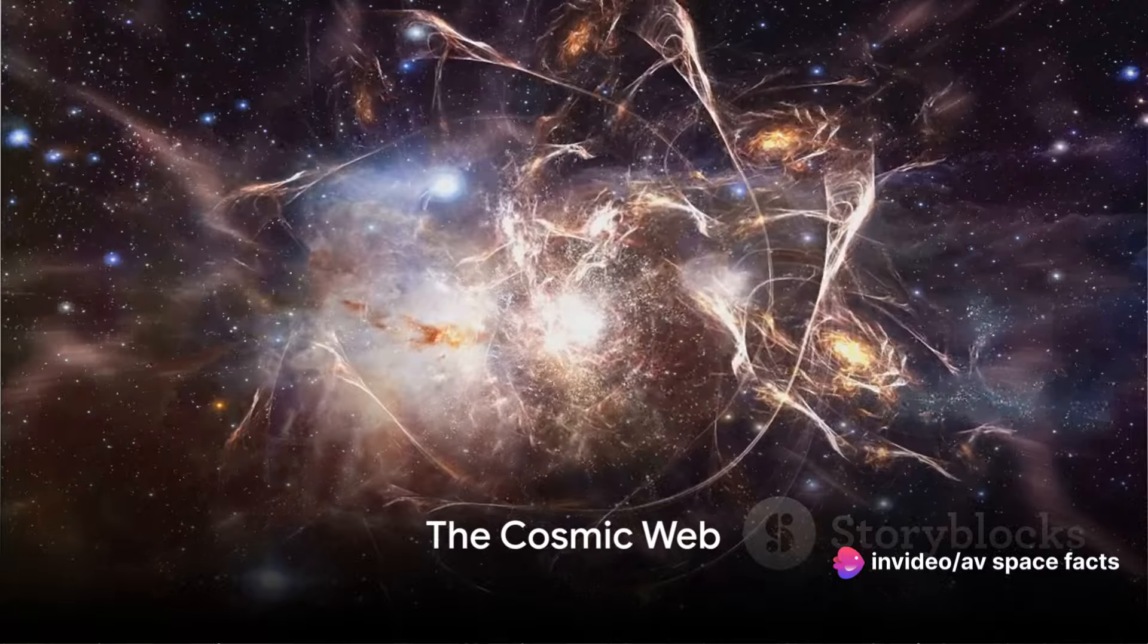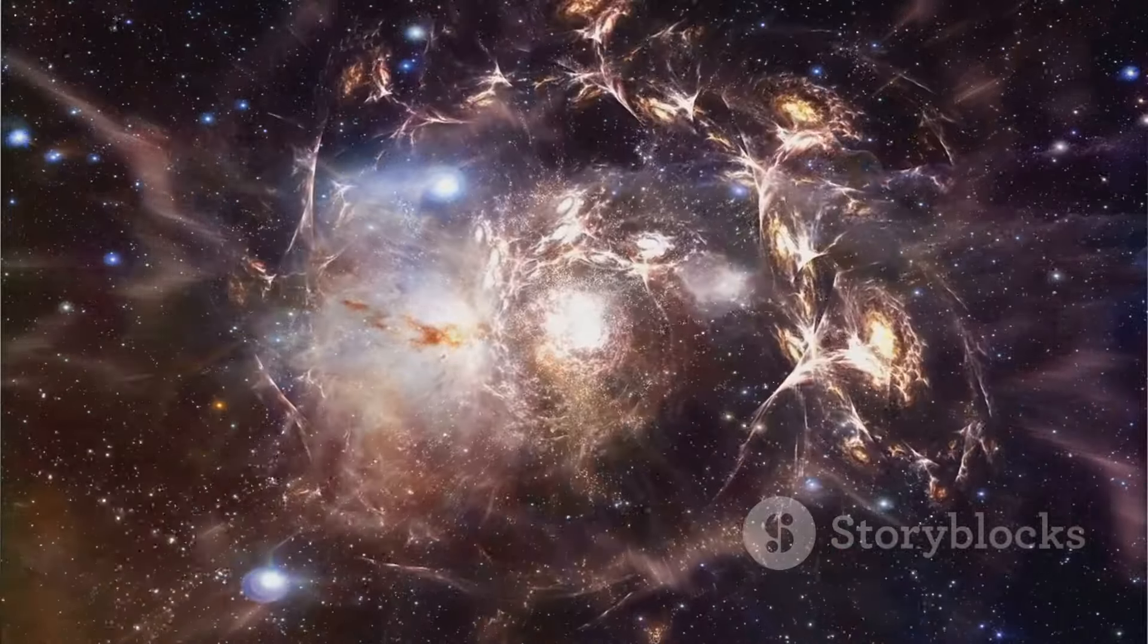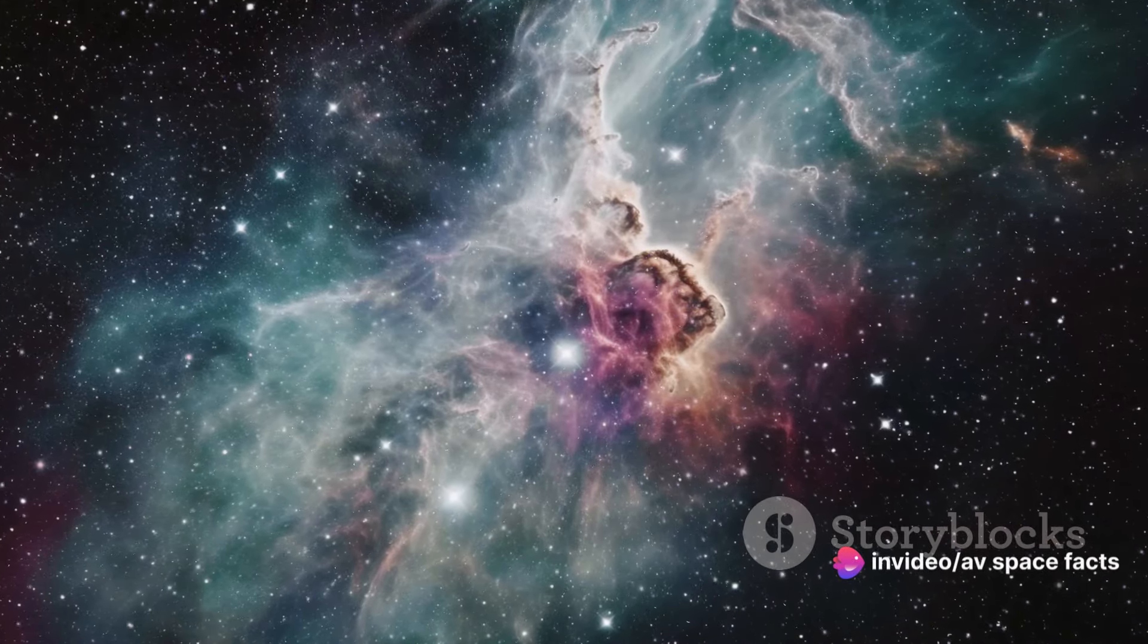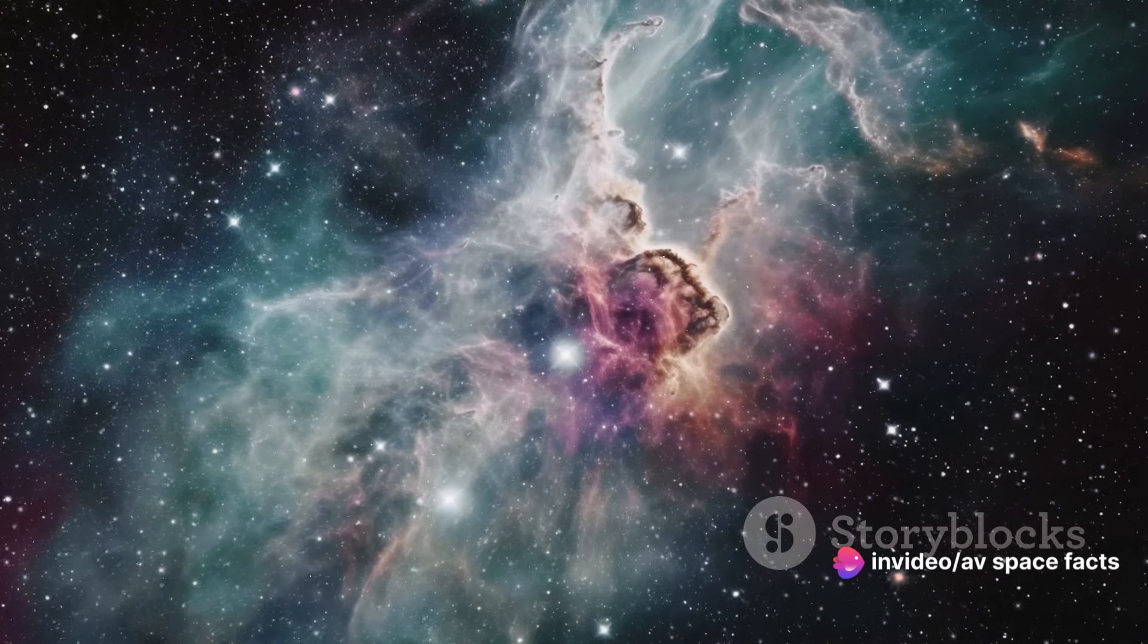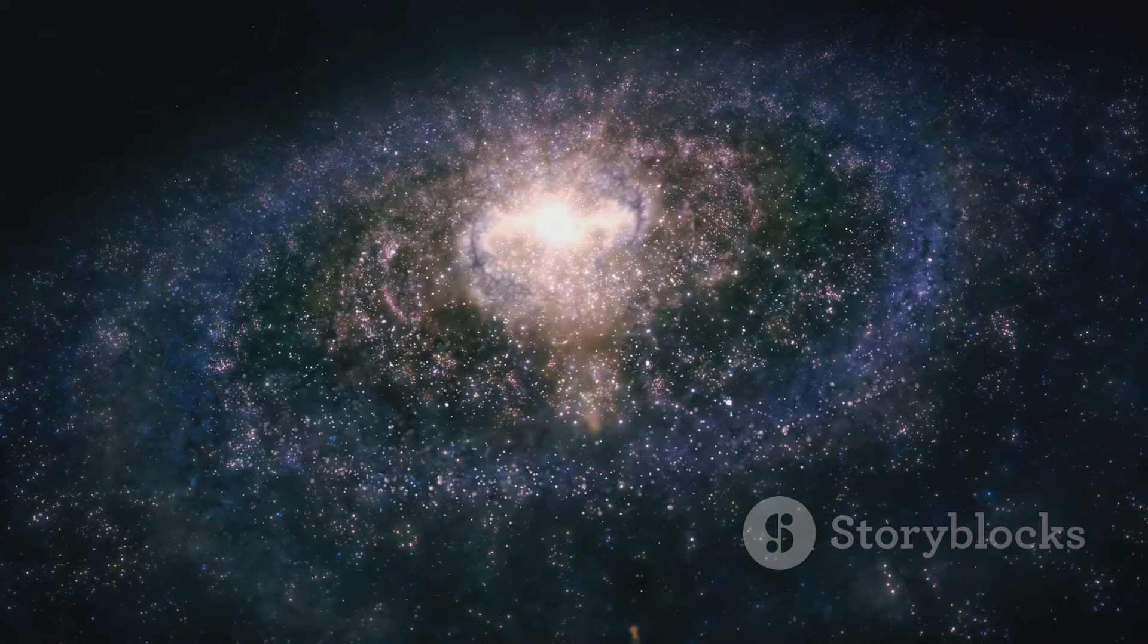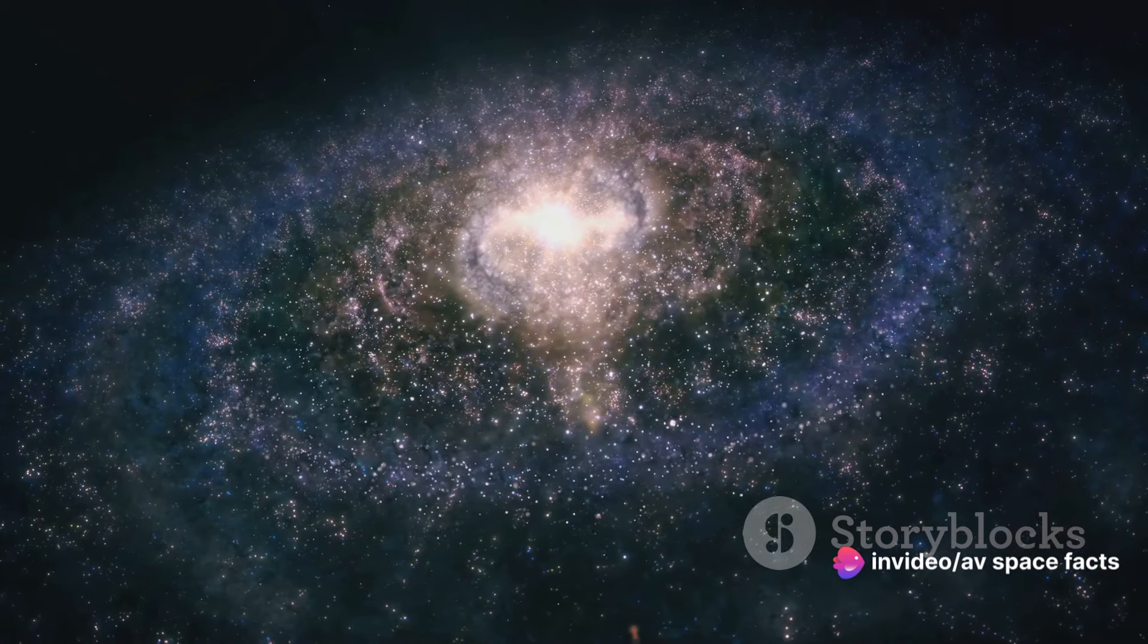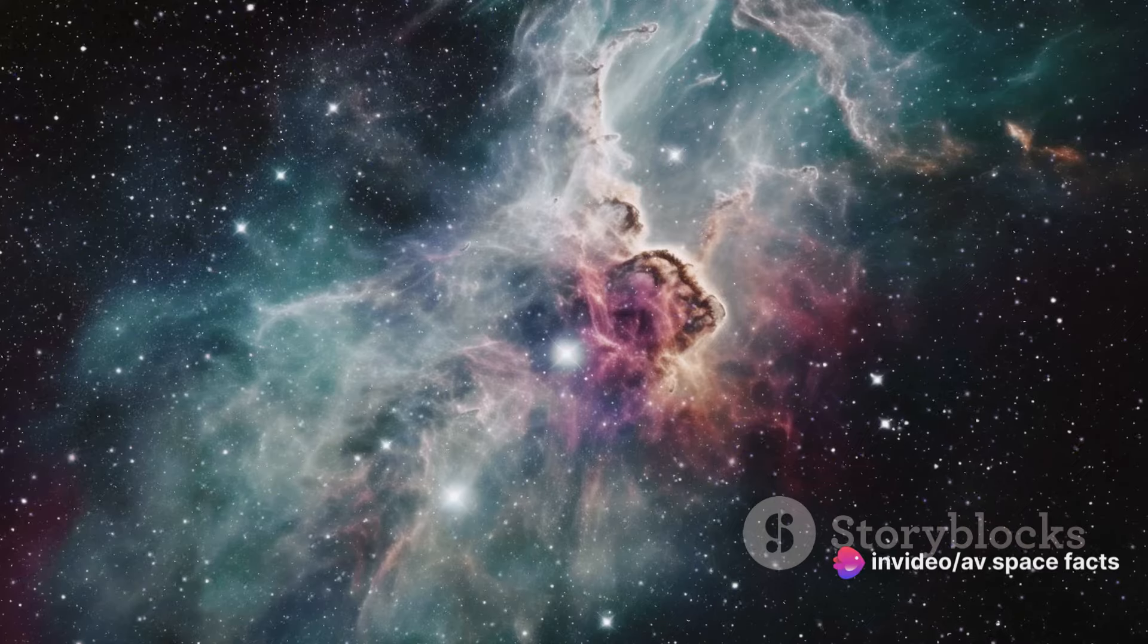Picture this, a cosmic web of galaxies each acting as a node spread out across the universe. Now, envision these galaxies not as isolated islands in the vast sea of space, but as interconnected points forming a grand cosmic tapestry. Welcome to the cosmic web, the large-scale structure of our universe. In this cosmic web, galaxies aren't randomly scattered. They are arranged in a specific pattern, known as a cosmic filament. These filaments, composed of dark matter and galaxies, stretch across the universe, creating a structure that resembles a web or a network.